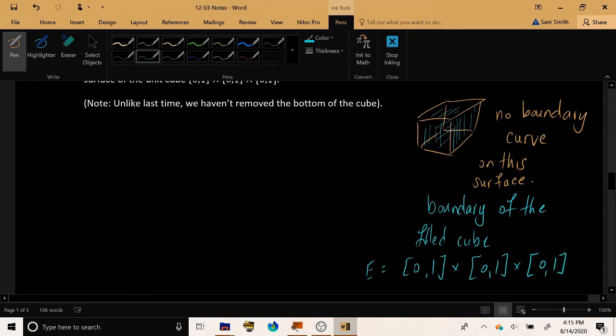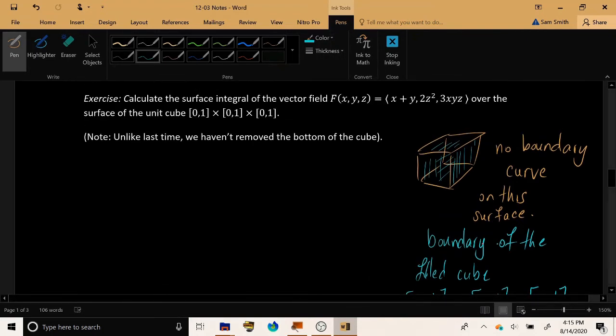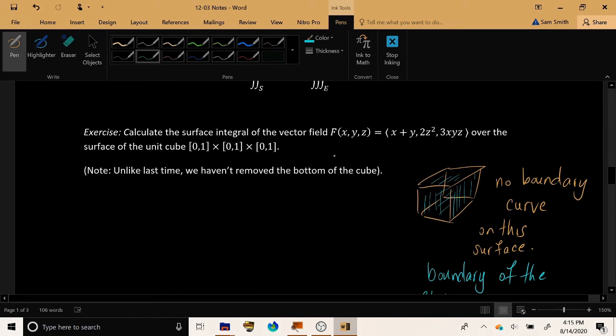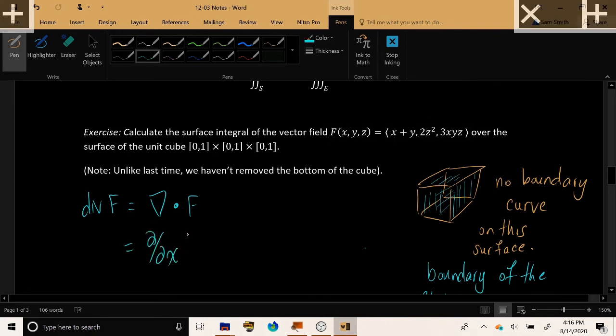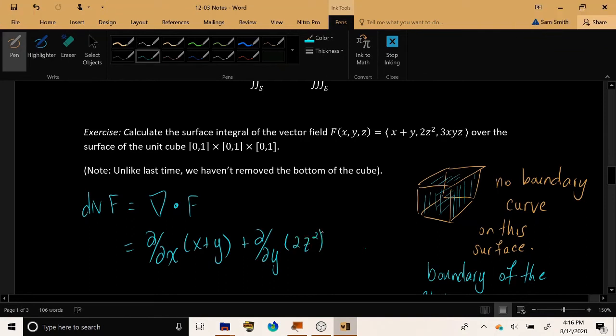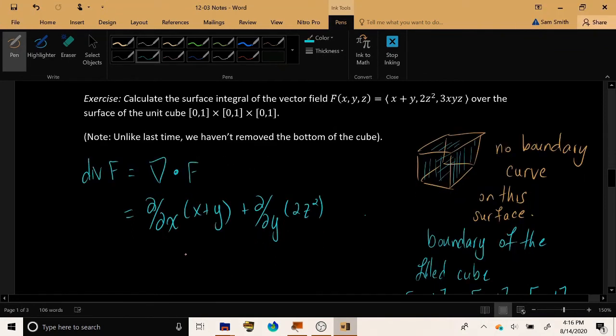Okay, so let's go ahead and calculate the Divergence of F. You remember how you take the dot product of Nabla with F, which amounts to taking the partial derivative with respect to x of the x component, partial with respect to y of the y component, and partial with respect to z of the z component.